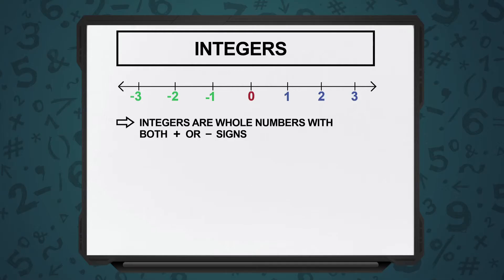The next one is integers. Integers will have all the whole numbers. So 0, 1, 2, 3, 4, so on and so forth.